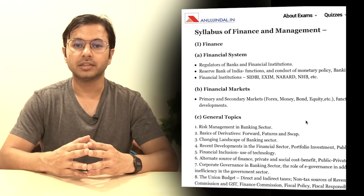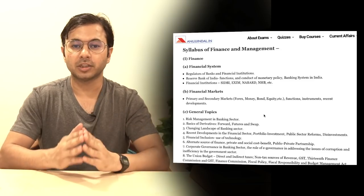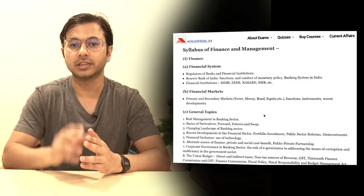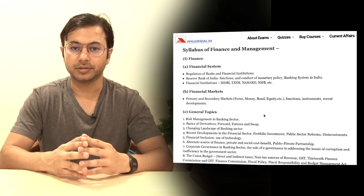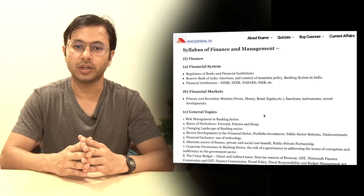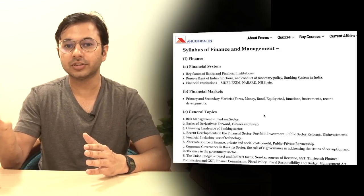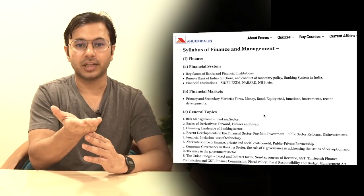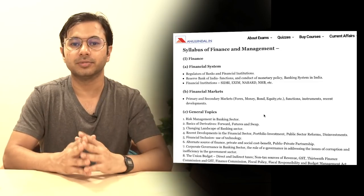Coming to Finance and Management, there are a total of 35 questions of 2 marks and 30 questions of 1 mark. A total of 45 marks worth of questions are taken directly from the management section. Again, a total of 45 marks worth of questions are asked from two areas combined: finance current affairs as well as finance theory syllabus. The remaining 10 marks worth of questions are normally asked from finance numericals. So the weightage of finance numericals is the least, followed by finance theory plus current affairs, and the most important part is the management syllabus.